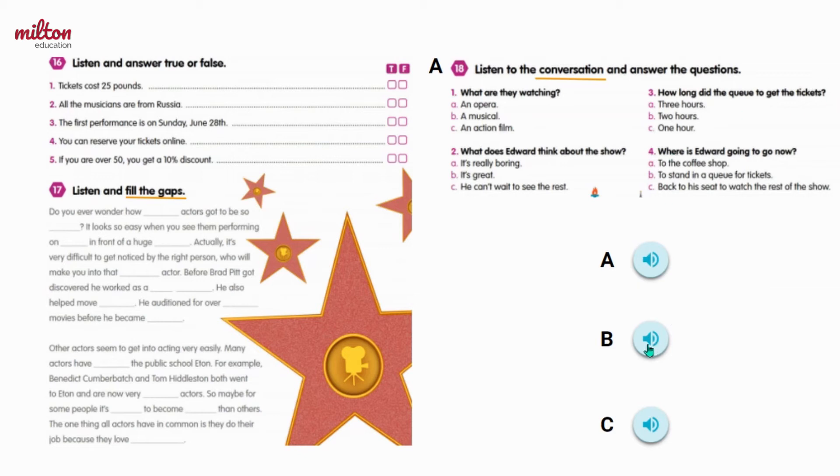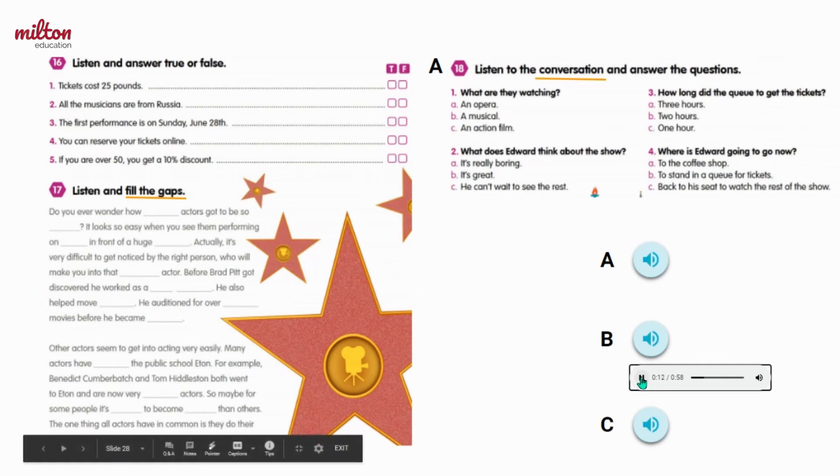Now let's listen to audio B. Do you think audio B is the dictation or the advert? Give it a listen. Do you ever wonder how famous actors got to be so famous? It looks so easy when you see them performing on stage in front of a huge audience. Actually, it's very difficult to get noticed by the right person who will make you into that famous actor.